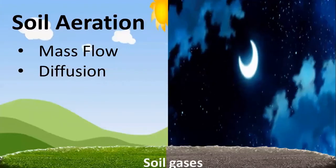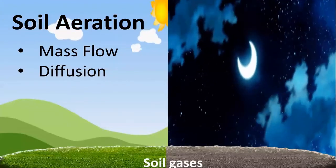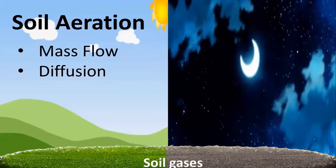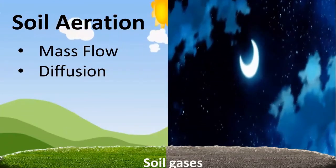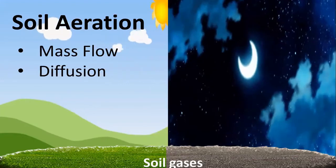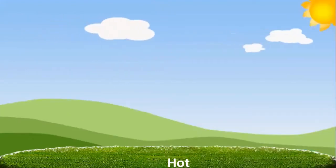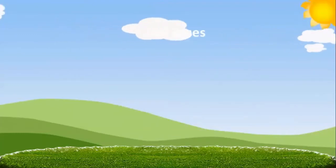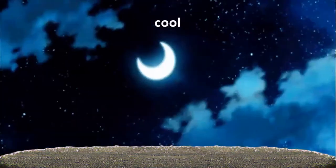Soil aeration can be explained by two mechanisms: mass flow and diffusion. In mass flow, the movement of air between the soil and the atmosphere can be seen during the day. The soil is heated up more than the atmosphere, and the soil gases start to expand and move to the atmosphere.